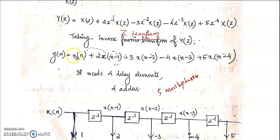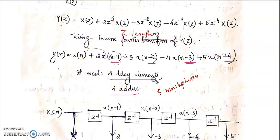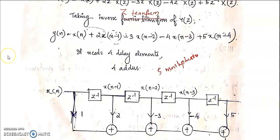When we check this expression, it is clear that we have 4 delay elements — 1 unit, another unit, another unit, and the last unit. They have 4 delay elements. And in this expression we have 5 terms, so we need 4 adders. They have 4 delay elements and 4 adders, and this expression can be realized.